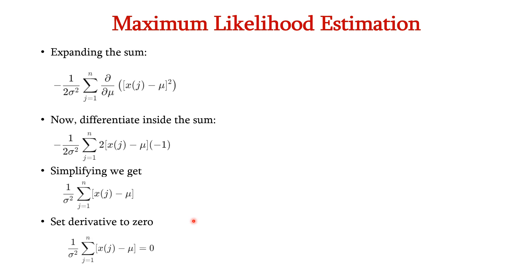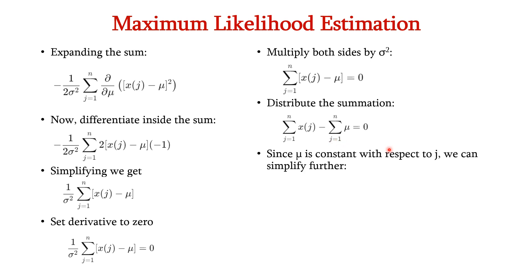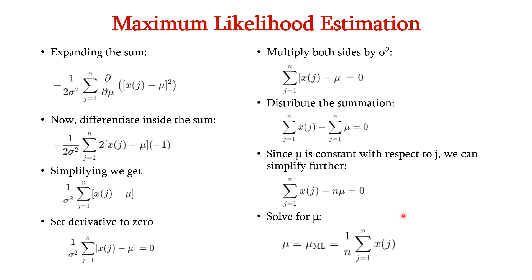Setting this derivative to zero and multiplying both sides by sigma^2, we get sum(x_j - mu) = 0. Distributing the summation gives sum(x_j) - sum(mu) = 0. Since mu is constant with respect to j, this simplifies to sum(x_j) - n*mu = 0. Solving for mu, we find: mu_ML = (1/n) * sum(x_j), where ML indicates maximum likelihood.